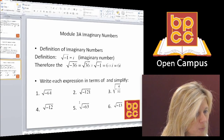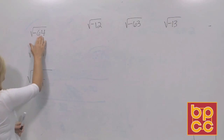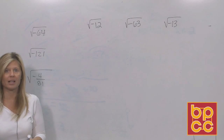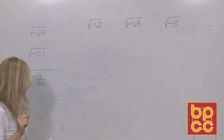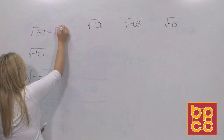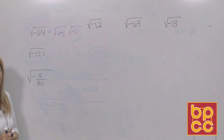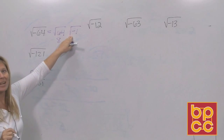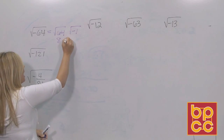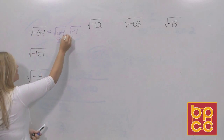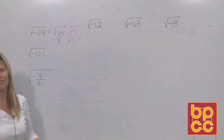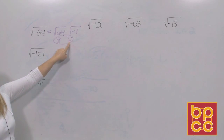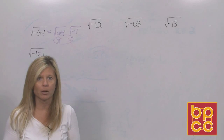Let's look at some examples on the whiteboard. The square root of negative 64 — if you type that into your calculator it gives an error, because there's no number times itself that makes negative 64. This can be rewritten as the square root of 64 times the square root of negative 1. The square root of 64 is 8, and the square root of negative 1 is imaginary, represented by i. So the square root of negative 64 is 8i. The i goes behind the 8 because, like any variable, it goes behind the number.